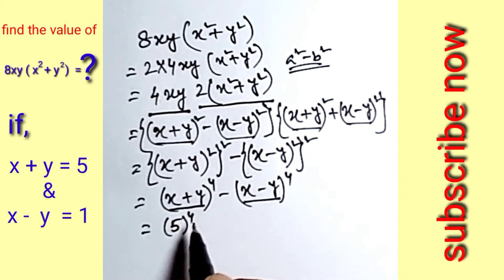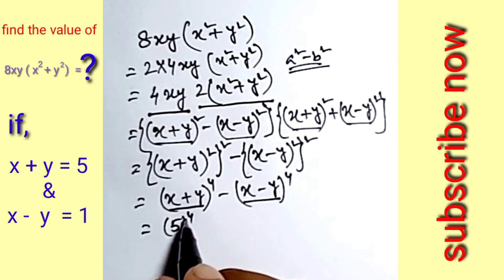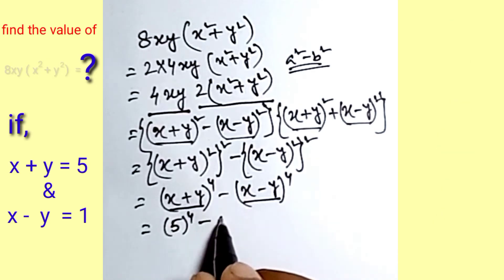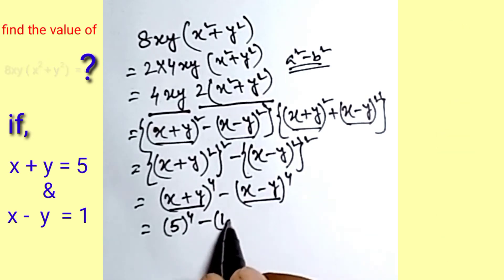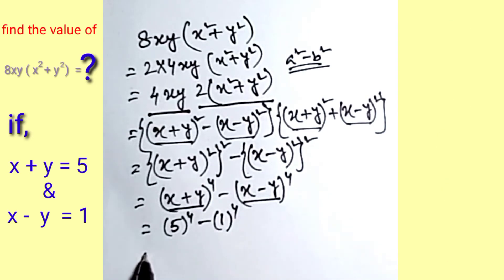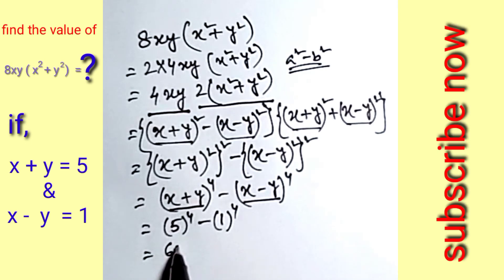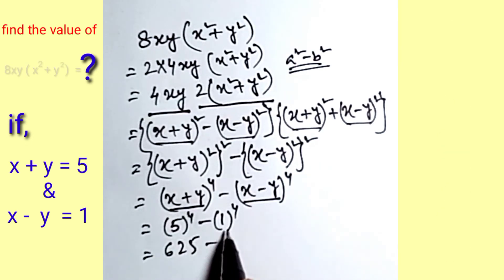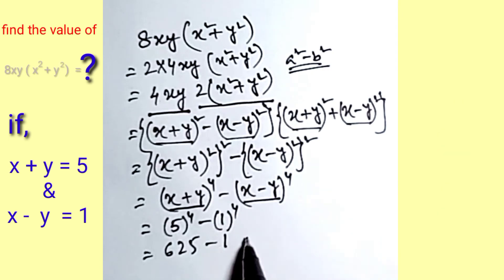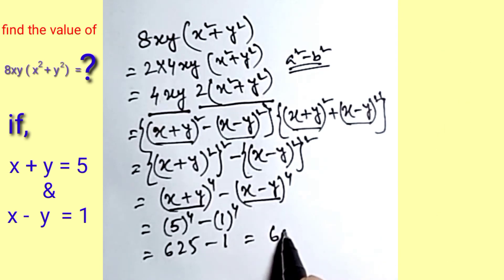Put the value: 5 to the power 4 and 1 to the power 4. The value of 5 to the power 4 is 625, and 1 to the power 4 is 1.